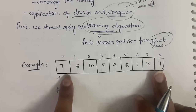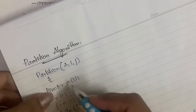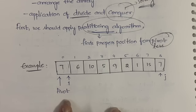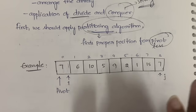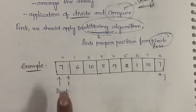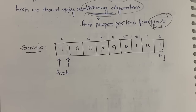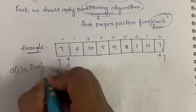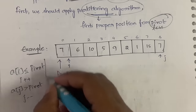In the partition algorithm, we initialize i to 0 and j to n minus 1. The pivot element is a[i], so 7 is our pivot element. i is at the first position, j is at the last position, and the first element also acts as the pivot. The condition to check is: while a[i] is less than or equal to pivot, do i plus plus; and while a[j] is greater than pivot, do j minus minus.